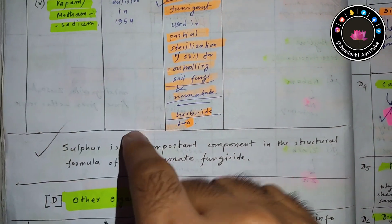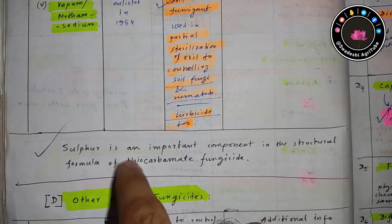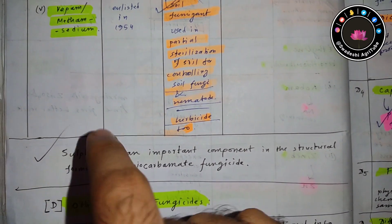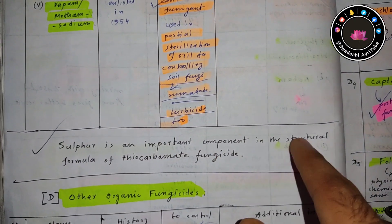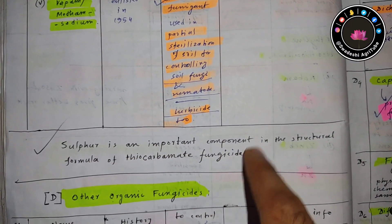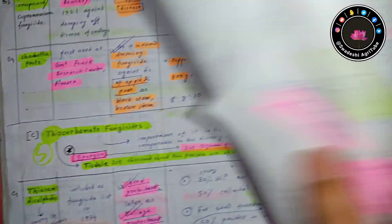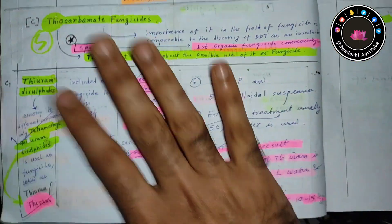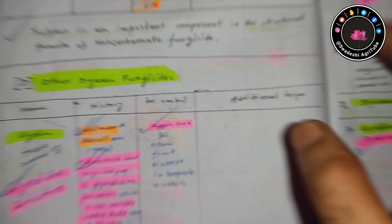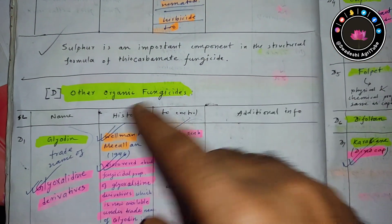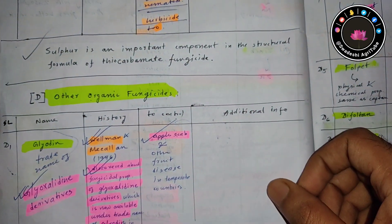One important factor is that sulfur is an important component in the structural formula of thiocarbamate fungicide. All the discussed fungicides have sulfur in their structure. That's for today. In the next video we'll talk about organic fungicides. Stay tuned and be subscribed.